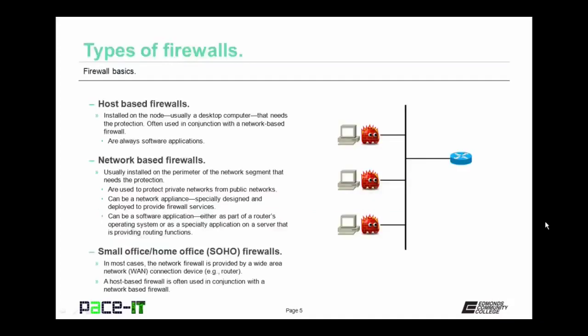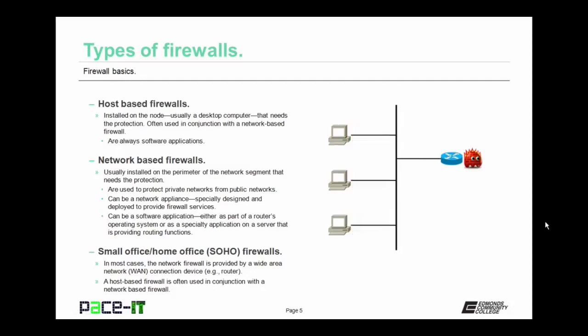First up are host-based firewalls. These are installed at the node, which is usually a desktop computer. They're often used in conjunction with network-based firewalls. Host-based firewalls are always software applications. Then there are network-based firewalls. Usually these are implemented on the perimeter of the network segment that needs the protection. They're used to protect private networks from public or outside networks. Network-based firewalls can be a network appliance — specially designed and deployed to provide only firewall services — or a software application, either as part of the router's operating system or as a specialty application on a server providing some routing function.